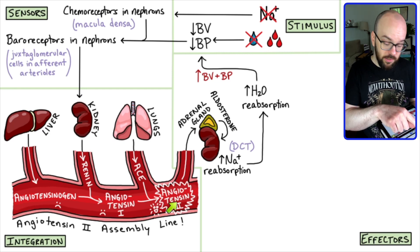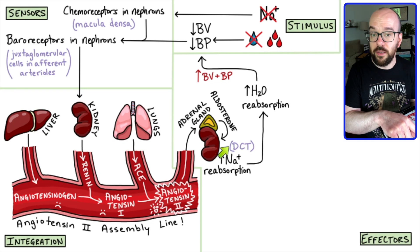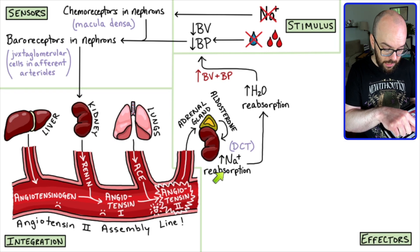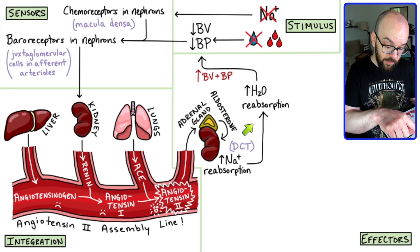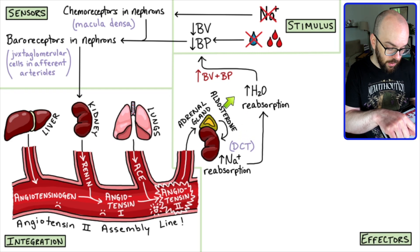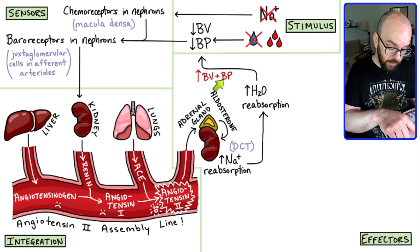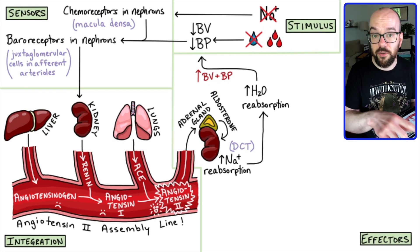Back to the main diagram: if we increase sodium reabsorption, that also increases water reabsorption, which increases blood volume — we're pulling more water back into the blood — and that also increases blood pressure. That's one of the most important effectors of this process, working through aldosterone on the distal convoluted tubule.